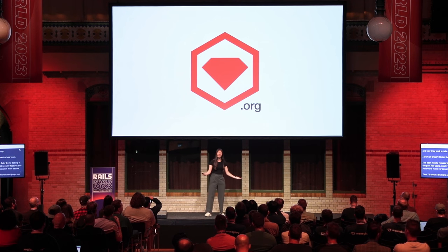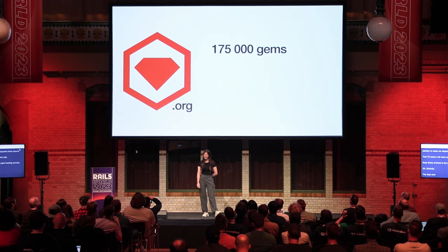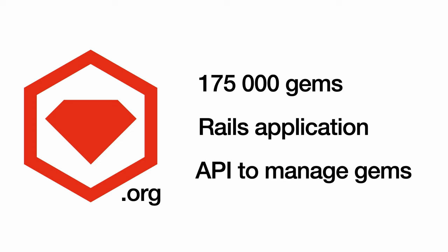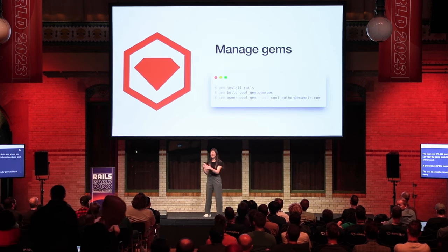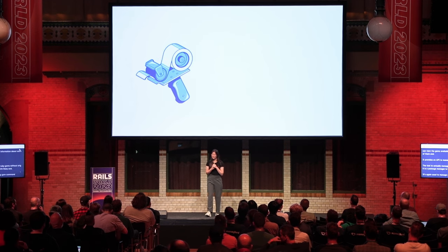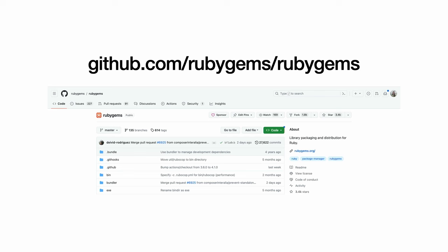RubyGems.org is the community's gem hosting service that hosts over 175,000 gems. It is also a Rails app where you can view the gems available and the information about each of them, and it provides an API to manage gems. The tool to actually manage these gems is RubyGems — without the .org. It is a package manager, bundled with Ruby, used to manage gems using the gem command. Bundler is also a gem that gets mentioned a lot with RubyGems. Its main purpose is to resolve and standardize the gems used in a Ruby project across all machines and environments so they all work together well. Fun fact: Bundler and RubyGems live in the same GitHub repo, even though each separate tool gets released separately.